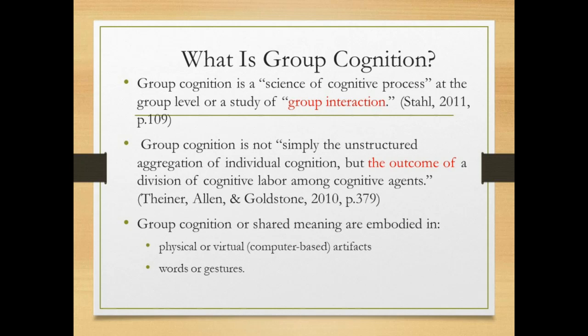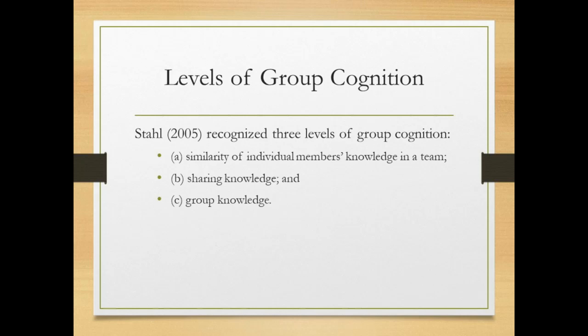When studying group cognition, researchers like to focus on physical and virtual artifacts that students create. We also study their gestures and words they produce during interaction. According to Stale, there are three levels of group cognition. The first level, the most rudimentary, refers to similarities of individual members' cognition. The second and third levels refer to sharing knowledge and group knowledge, requiring intensive collaboration and negotiation.